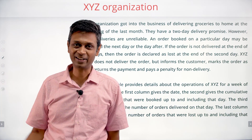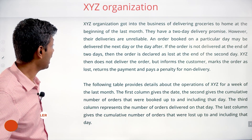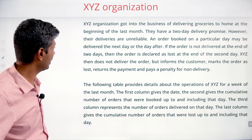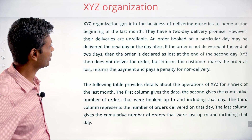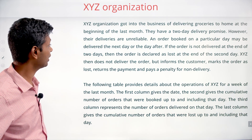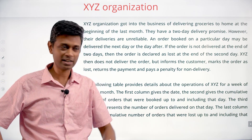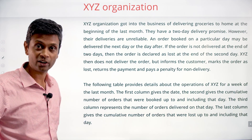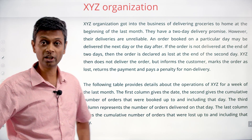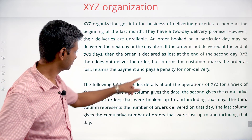XYZ organization got into the business of delivering groceries to home at the beginning of last month. They have a two-day delivery promise, however their deliveries are unreliable. An order booked on a particular day may be delivered the next day or the day after. If the order is not delivered at the end of two days, it is declared as lost. XYZ then does not deliver the order, but informs the customer, marks the order as lost, returns the payment, and pays a penalty for non-delivery.